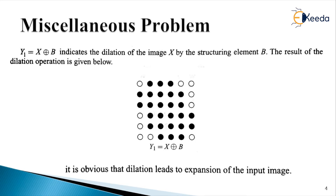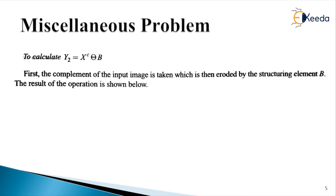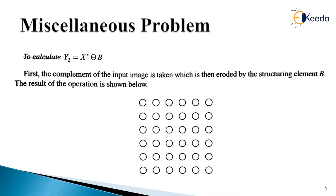Now for part three, we calculate Y2 as the image obtained by eroding the complement of X. The complement of X was found as the solution to part one. If we erode that image with the given structuring element, we get the resultant image. The result is that we have all pixels in white color with no dark pixels at all. This is the answer to part three.